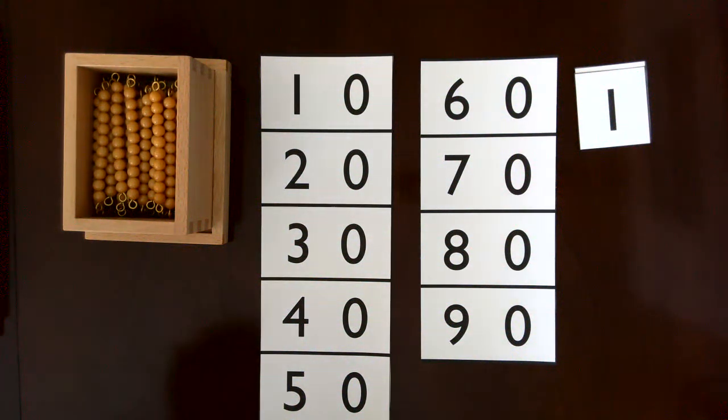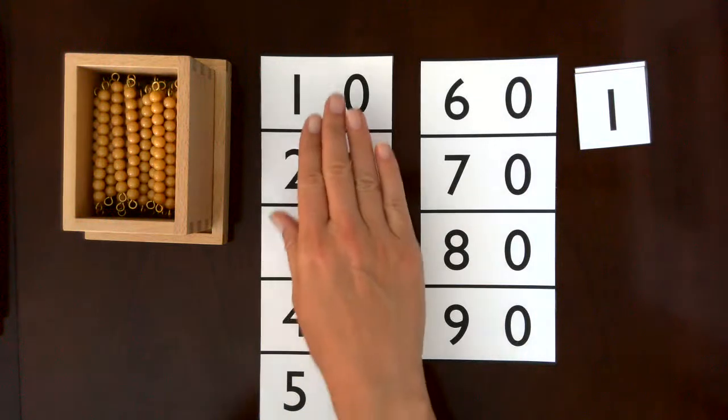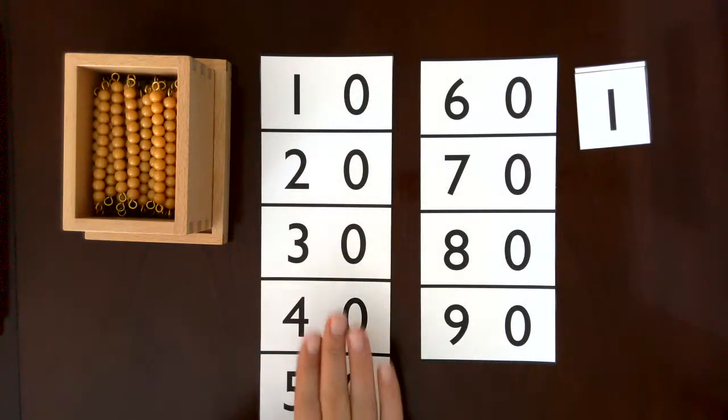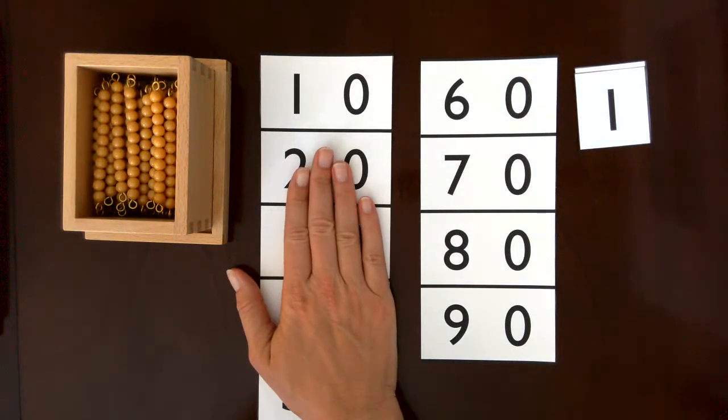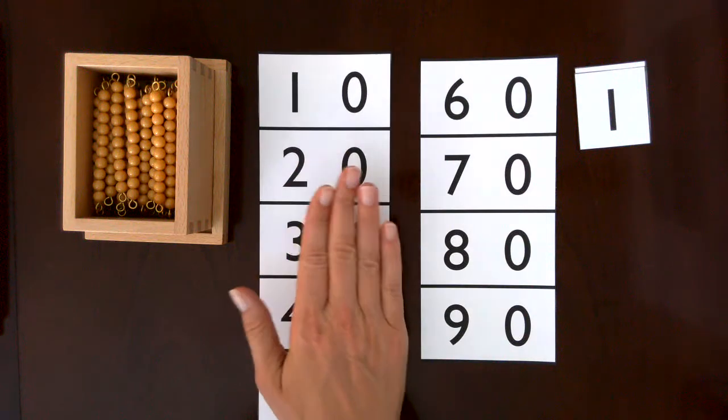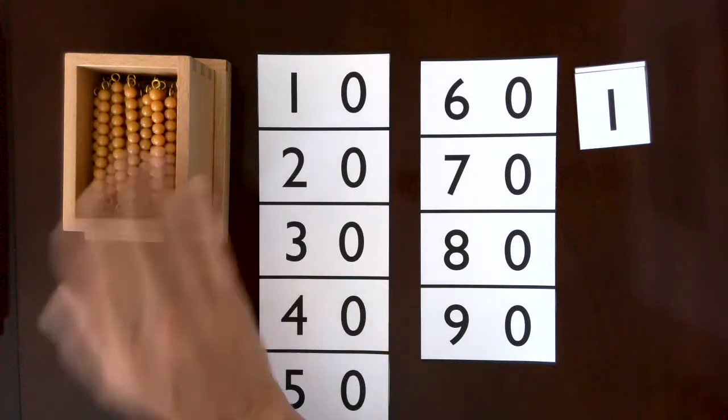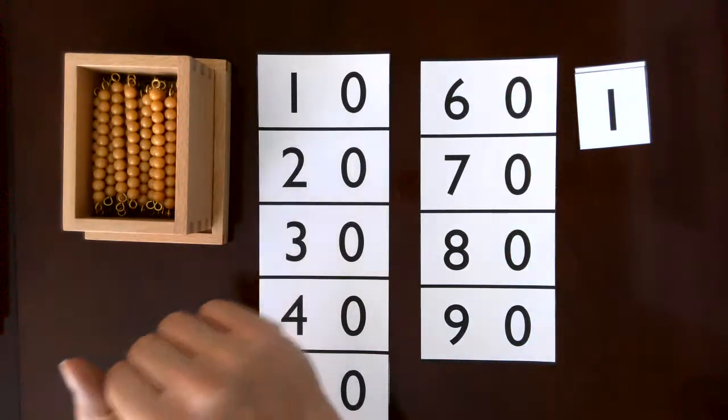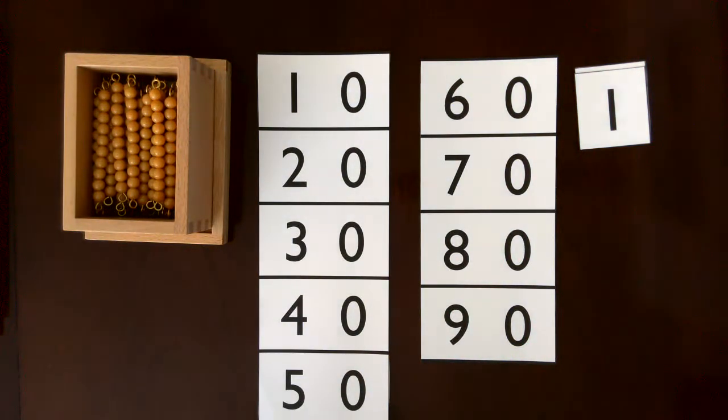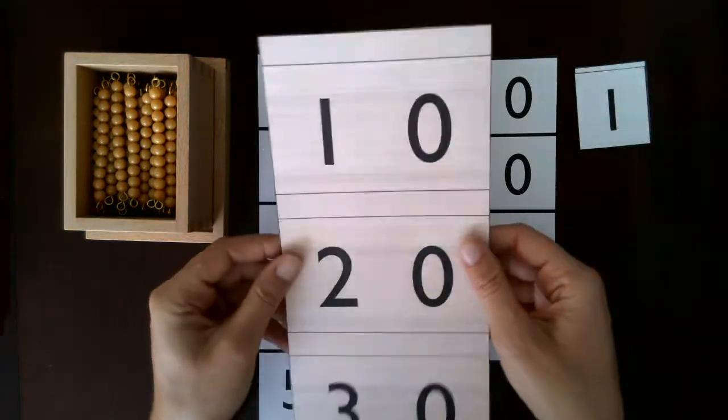This is a lesson in counting from 10 to 99, combining the real quantities with the written numeral symbol. This lesson should come after a lesson has been given in just the symbols counting by tens and just the quantities counting by tens, and then combining the two.